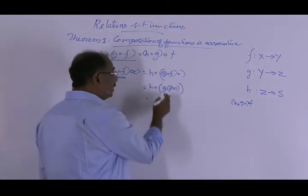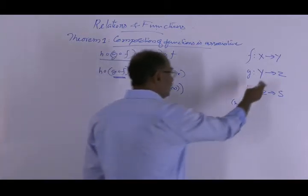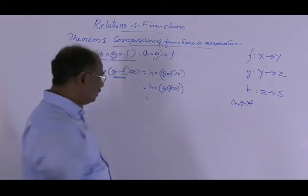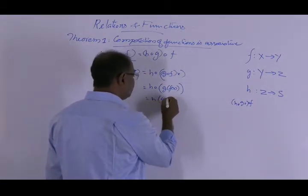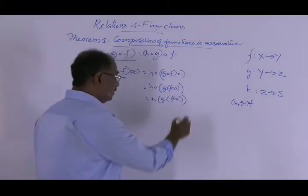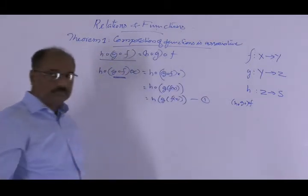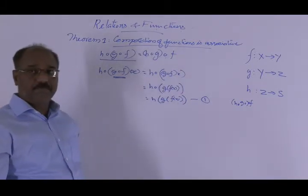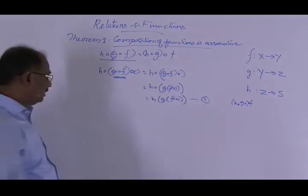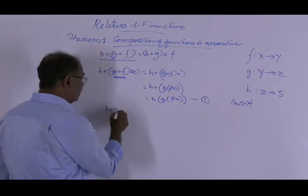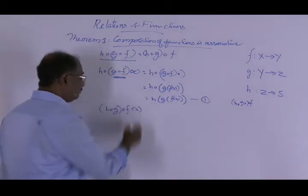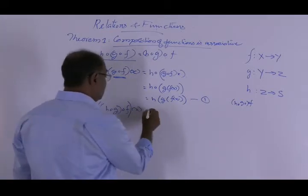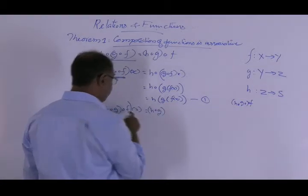And this is again equal to h(g(f(x))). Note that g(f(x)) is an element in Z, so h∘(g∘f) of x equals h(g(f(x))). This is true for any x — that means it is true for all x in capital X. Now consider the right side: (h∘g)∘f of x, which is equal to h∘g of f(x).